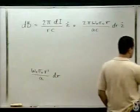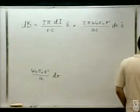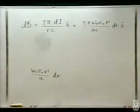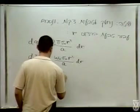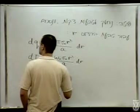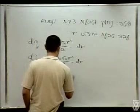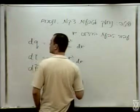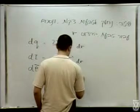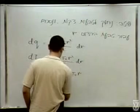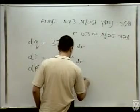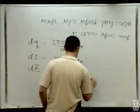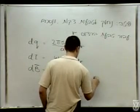בואו נרשום גם את זה פה בצד, נצטרך את זה בהמשך: 2π אומגה-אפס סיגמה-אפס, R/(AC), DR בכיוון Z.